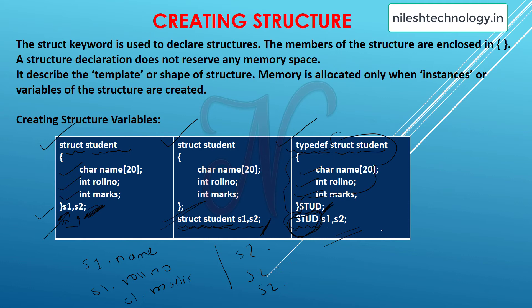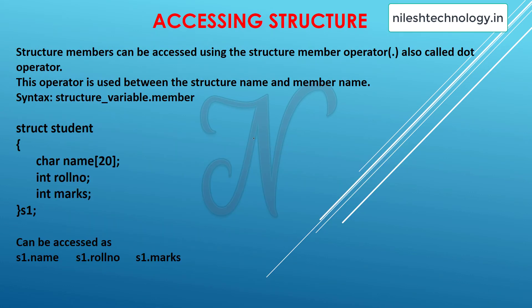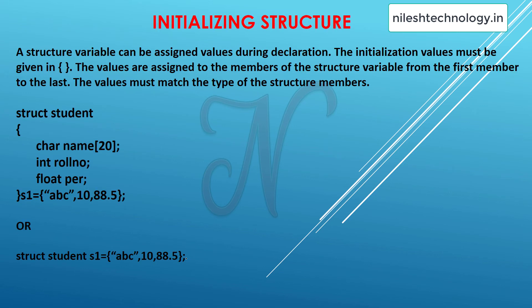These are the three different ways to create a structure. Accessing a structure is done using the dot operator to go inside the structure. Here I give the structure name student with three variables declared, and s1 is my structure variable. By using s1 we can access name, roll number, and marks as s1.name, s1.roll_number, and s1.marks. This is how we access structure members using the dot operator.